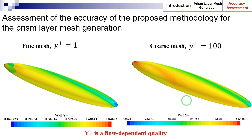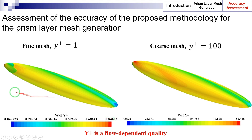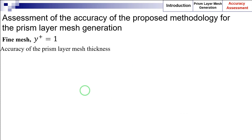That is why it is recommended to use a turbulence model with an all-y+ wall treatment whenever possible, since this type of turbulence model adopts an appropriate wall treatment based on the local y+ value. For the fine mesh, where the target y+ value was set as one, the maximum y+ value over the body surface is very close to one. However, there are some regions where y+ is significantly smaller than one. In the case of the fine mesh where no wall functions are used, this y+ variation over the body surface does not cause any problem as long as the y+ values remain smaller than one.